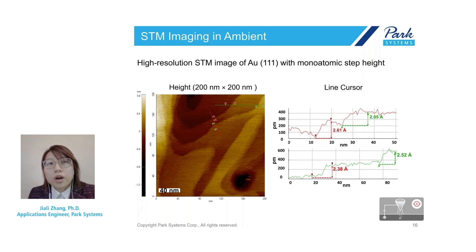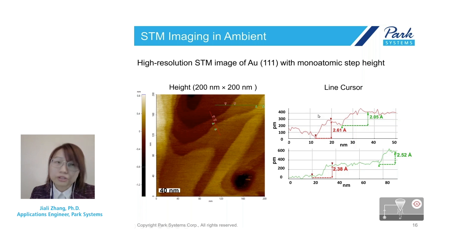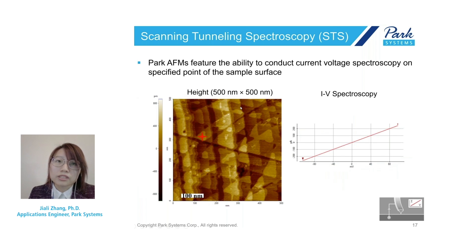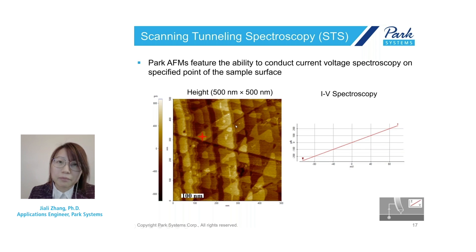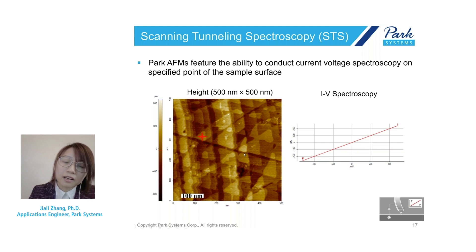Not only does our STM module enable users to obtain high-quality images, but using the STM tip as a nanometer-scale contact, you can also generate scanning tunneling spectroscopy, or STS, results. This STS result provides a plot of current as a function of bias, measured at a selected point after taking an STM image. It can be used to study the local electronic state of the sample at designated positions.